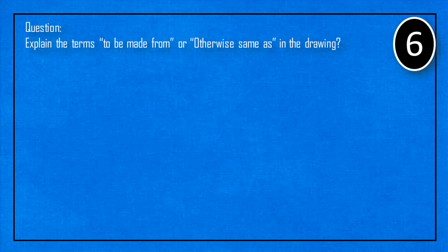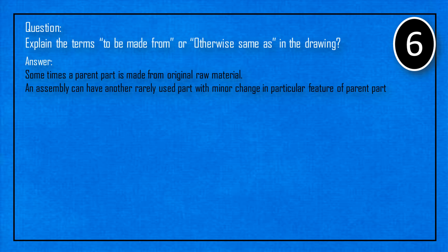Explain the terms to be made from or otherwise same as in the drawing. Sometimes a parent part is made from the original raw material. An assembly can have another rarely used part with minor change in particular feature of parent part.